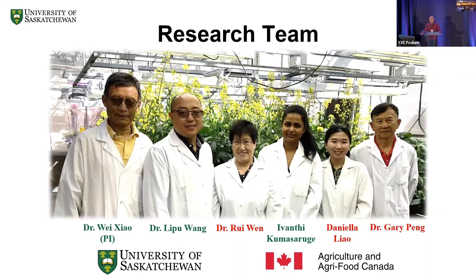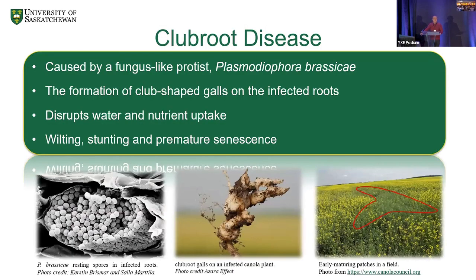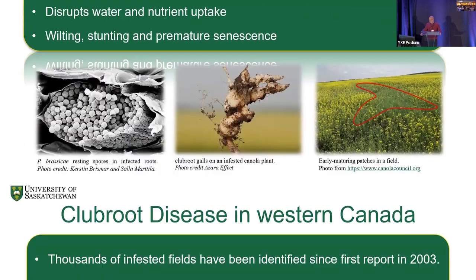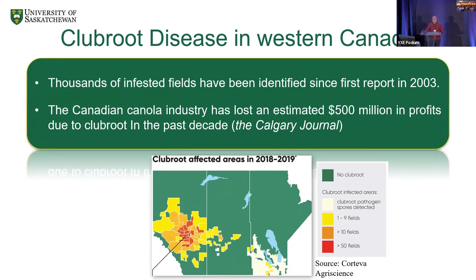Clubroot disease is caused by a fungus-like protist, Plasmodiophora brassicae. It forms club-shaped galls on infected roots, disrupting water and nutrient uptake, causing wilting, stunting, and premature death. Clubroot was first found in 2003 in Western Canada; since then, thousands of infested fields have been identified, costing millions of dollars in losses for the canola industry in Canada.